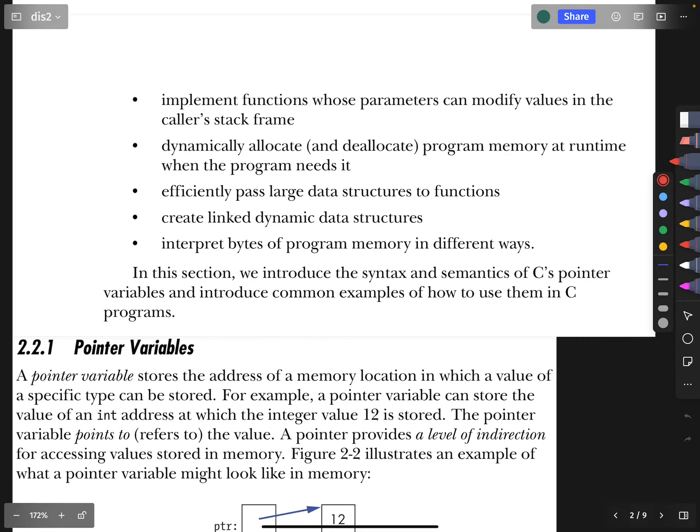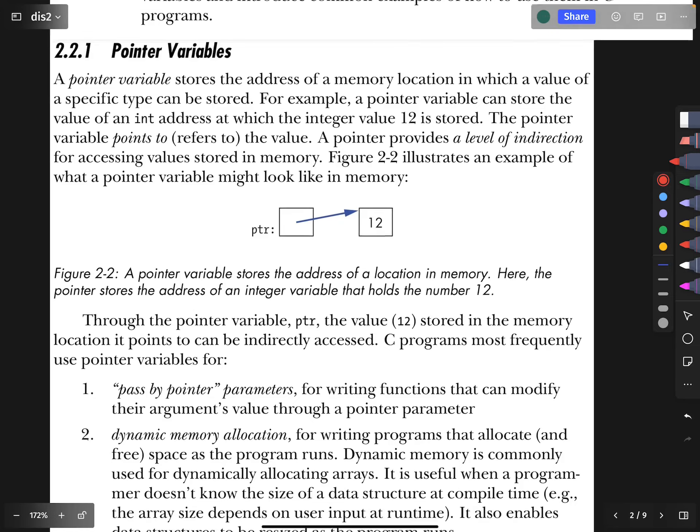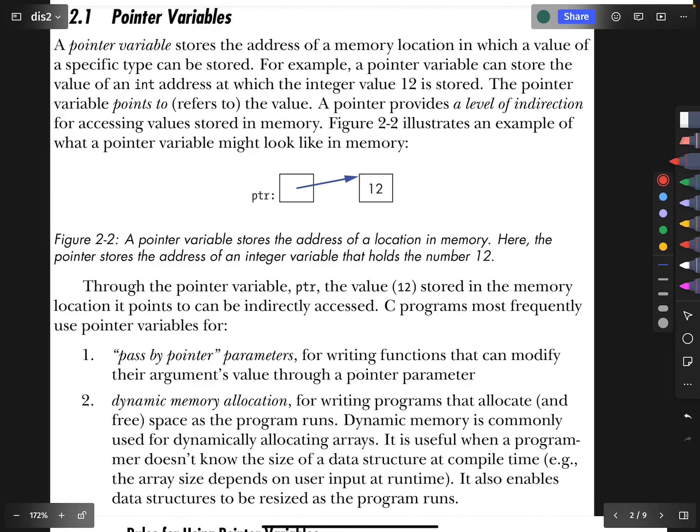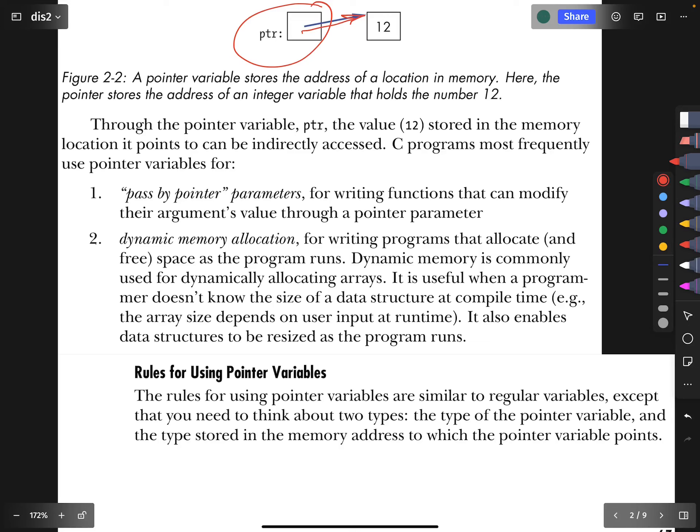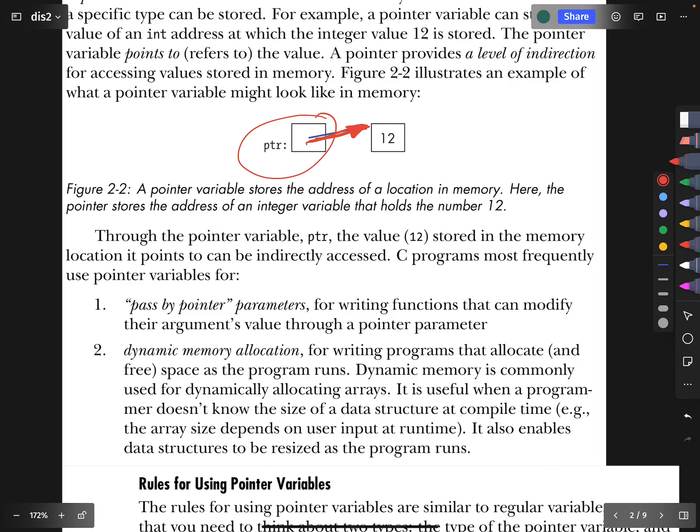Here we're going to start talking about pointer variables. You can read a general description of what pointer variables do, but I think it makes more sense to skip right over to this picture where we say that a pointer variable points to some address in memory. It is one variable storing a number that is the address of some other variable.